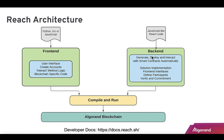The back end is JavaScript-like Reach code — it generates, deploys, and interacts with smart contracts automatically. You define your front-end interfaces as a list of methods and properties, define the participants involved, and then get to verification. On the front end, you create the user interface — create accounts, interaction method logic, and any blockchain-specific code. For example, block timing varies by chain. Usually you don't have to deal with any of that — you compile, run, and it deploys to the Algorand blockchain.